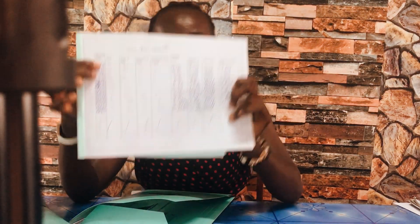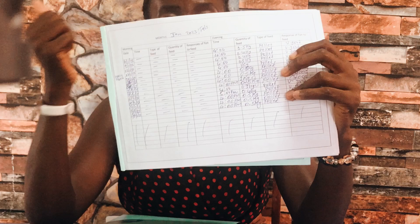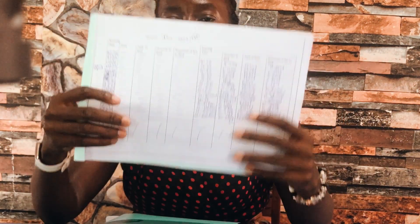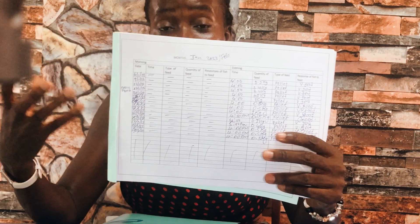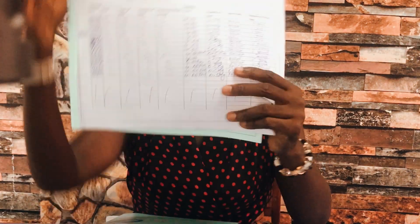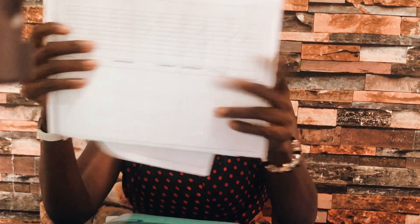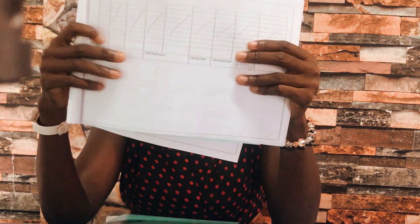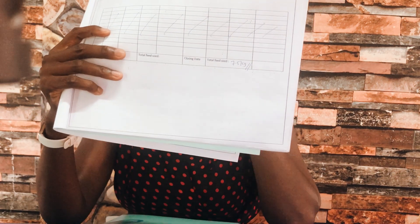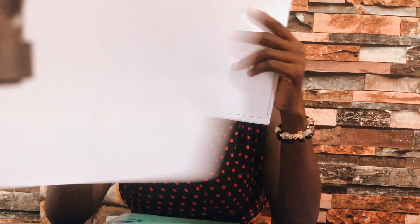Inside the feed chart we have dates — you have to put the dates. The time you feed is also important, the type of feed, whether you use powder feed or pellet feed, the quantity in kilograms or grams. The response of the fish is really important, so when you are feeding, you need to pay attention and observe how the fish behave — if they are behaving poorly or not responding to the feed. Because we feed morning and afternoon, this table is divided into two. At the end of every month, we record the total feed used and the date you close the file. This gives you an informed decision on the amount of feed used per month, and you can add it up until the end of production.